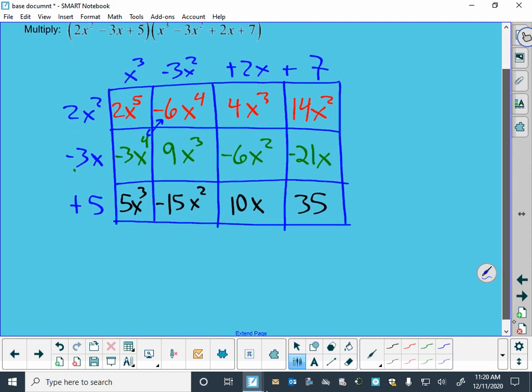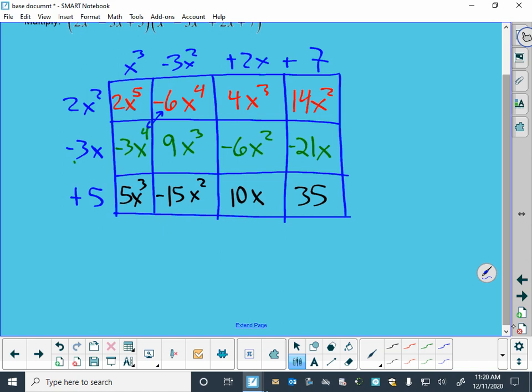We're going to start with the 2x⁵ in the upper left. Then our x⁴ terms: we had negative three and negative six - that's negative 9x⁴. Our x³ terms: five plus nine is 14, plus another four - that's 18x³.